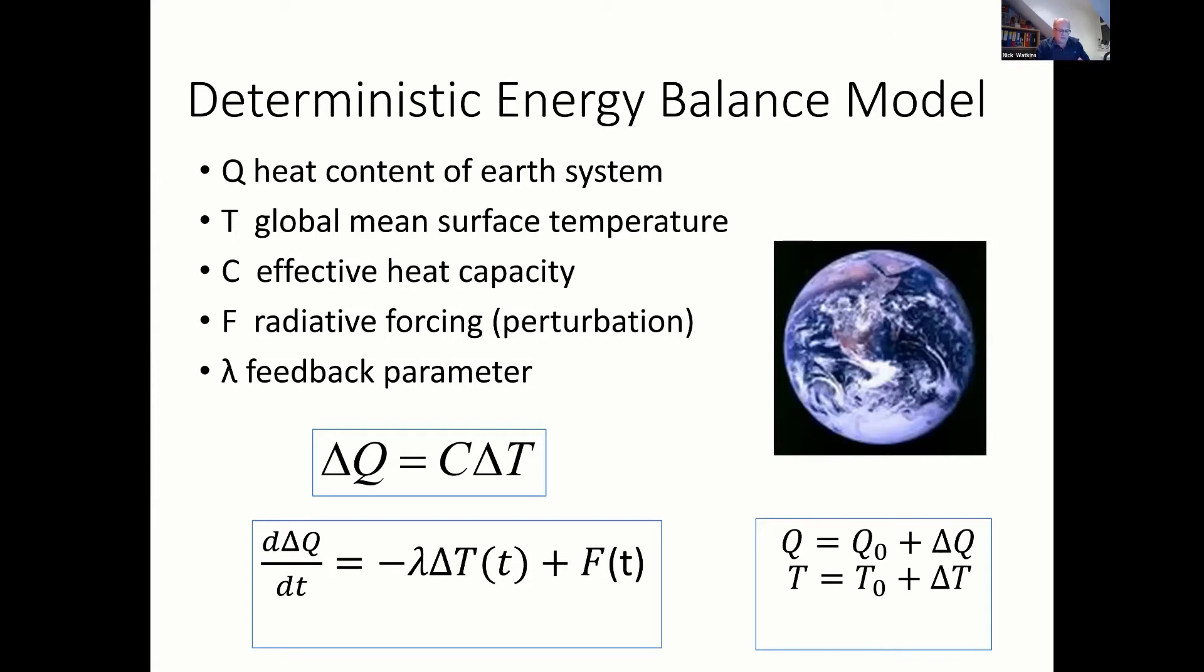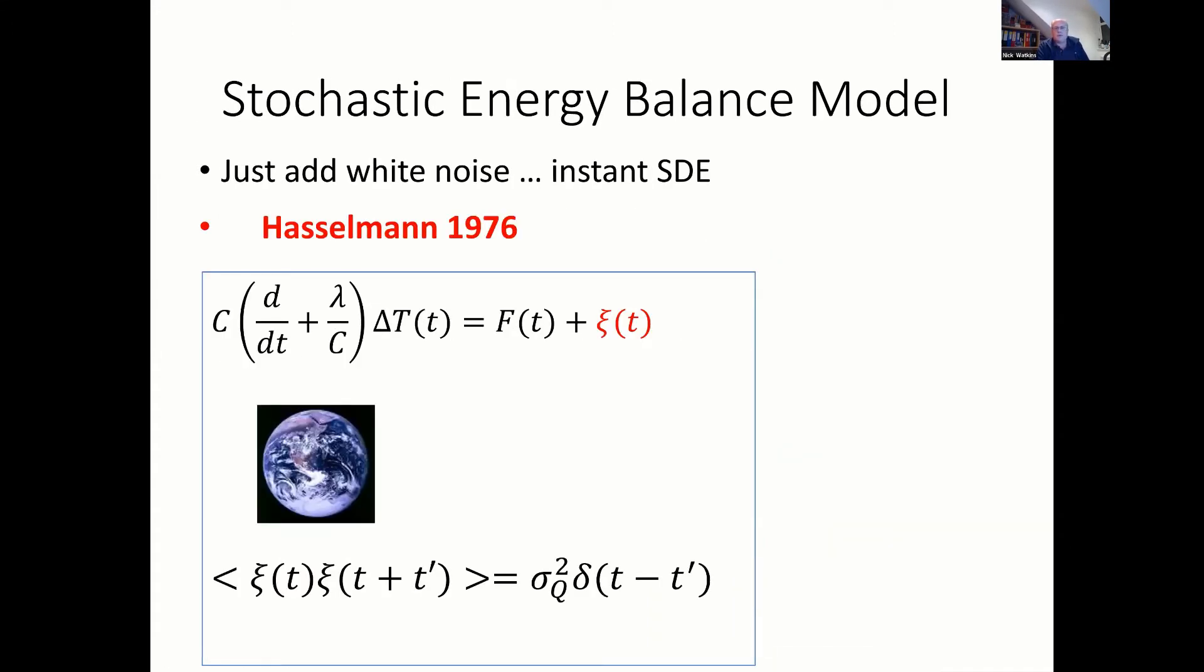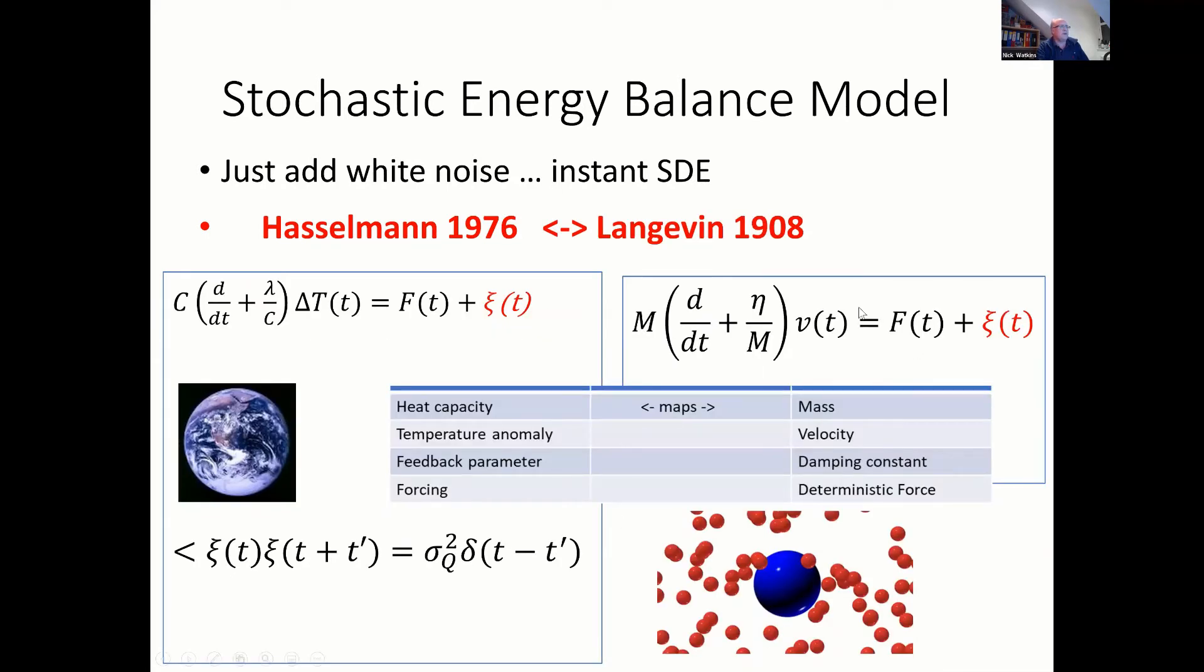So that's the first thing that all of you will have seen, I'm sure, the classic zero-dimensional EBM. This is just to remind you of the notation. And I think most of you will be aware that rather like instant mashed potato, you can turn this into an instant stochastic differential equation by adding white noise. In this case, the white noise is so-called white because it's delta correlated. And I think most of you will be aware that there's a one-to-one match between this and the original stochastic equation of physics, which is the Langevin equation. Essentially what you've done is you replaced heat capacity with mass, the feedback parameter with damping and so forth, and the forcing with the deterministic force. And of course, the temperature anomaly with velocity now.